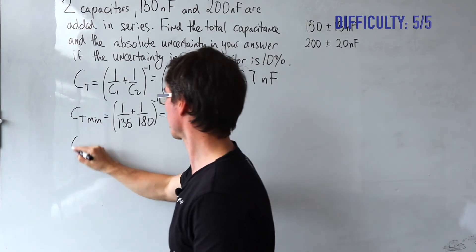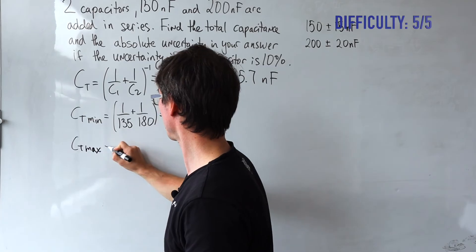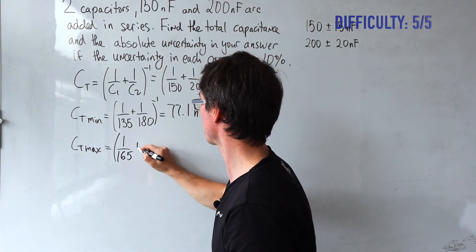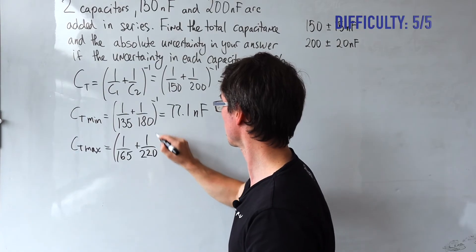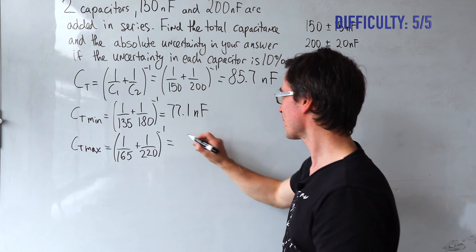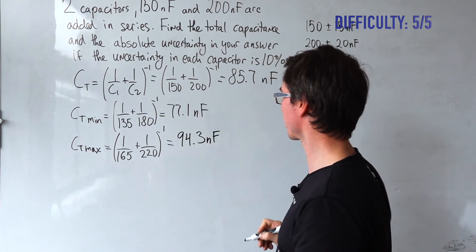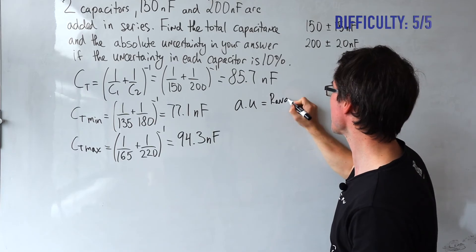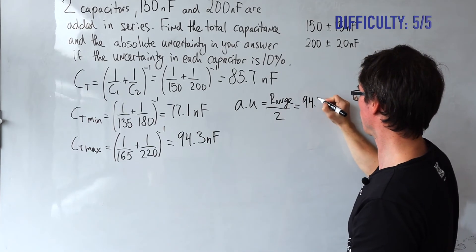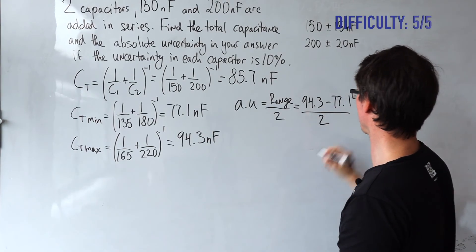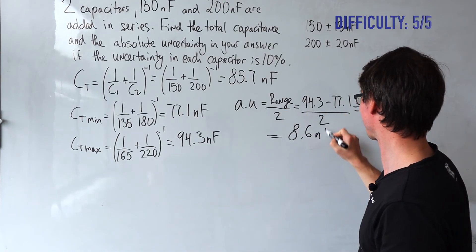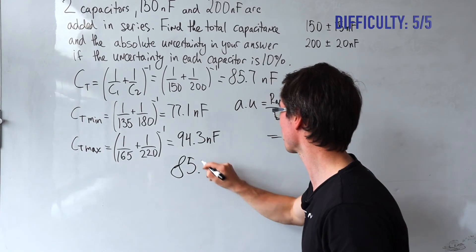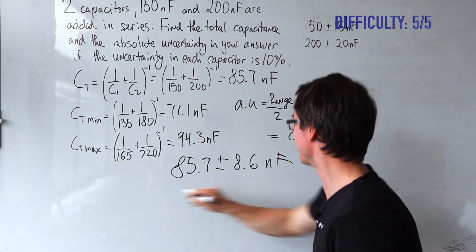The maximum total capacitance uses the largest values: 1 over 165 plus 1 over 220, raised to minus 1, gives 94.3 nanofarads. The absolute uncertainty is half the range: 94.3 minus 77.1, divided by 2, which gives approximately 8.6 nanofarads. So our final answer is 85.7 plus or minus 8.6 nanofarads.